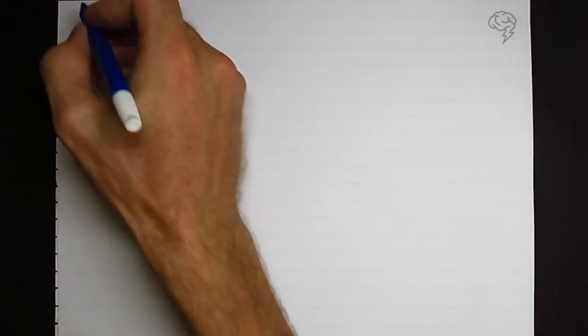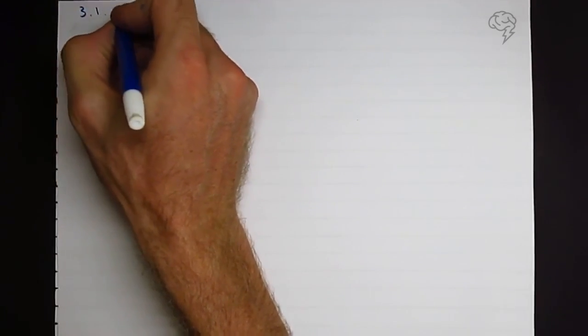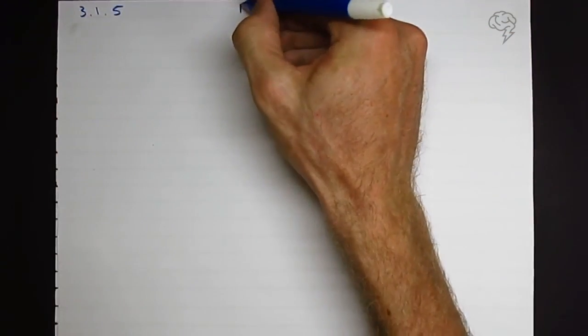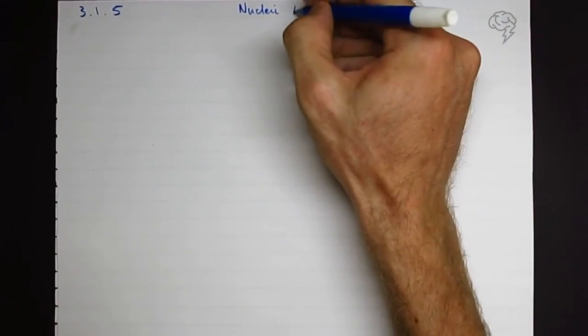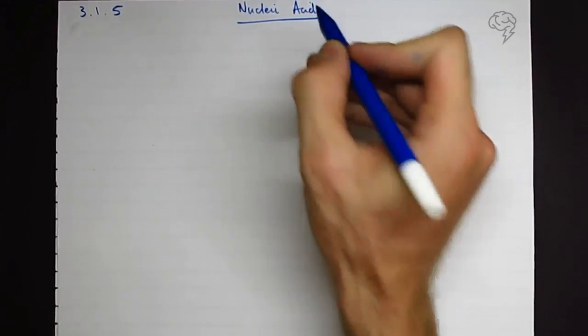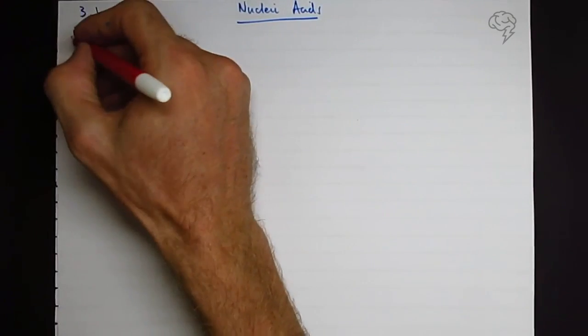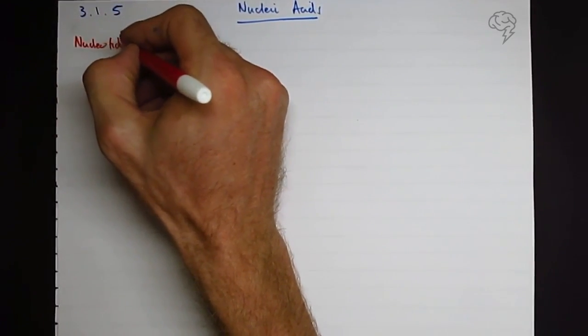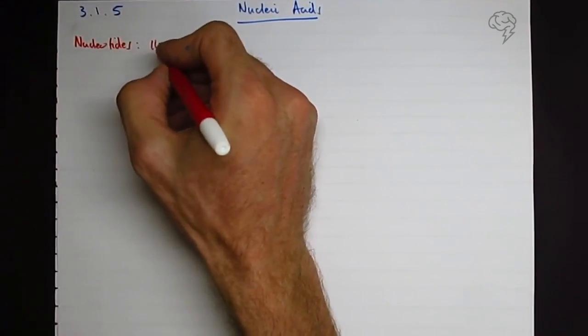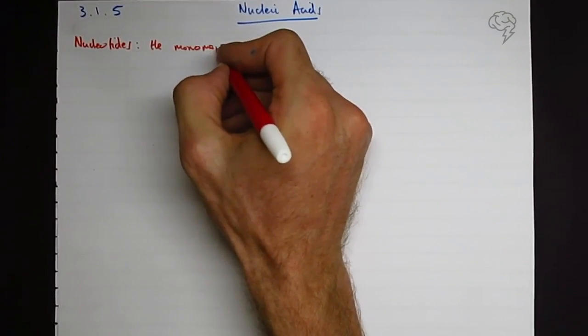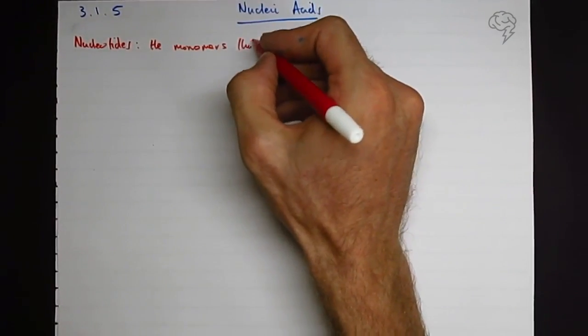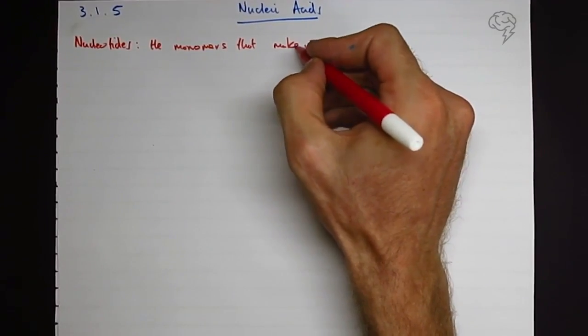Okay, section 3.1.5, the numbers are going up, it's good news. Nucleic acids. Well, nucleic acids, a couple of key terms that we need to know. Nucleotides - these are the monomers, one unit monomers that make up polynucleotides.